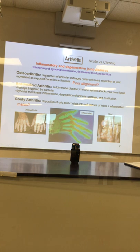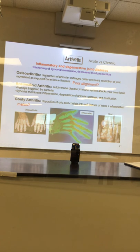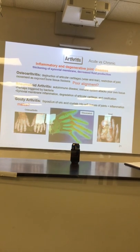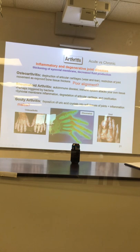Moving on — gout. It's really a male thing for the most part; something about how males accrue certain nucleic acids. When you eat foods that are really rich in purines — preserved meats, rich cheeses, red meat, deli sandwiches — it causes a buildup of uric acid in the body.